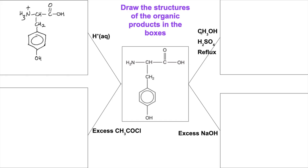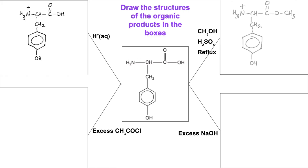Moving on to this one: we've got an alcohol — methanol in this case — alcohol, sulfuric acid, and reflux. These are all the conditions and reagents for an esterification reaction, so we're going to get an ester group forming here. The carboxylic acid reacts with the alcohol to form an ester, but the H⁺ ions from the acid will also protonate the NH₂ group, so we're going to get that.